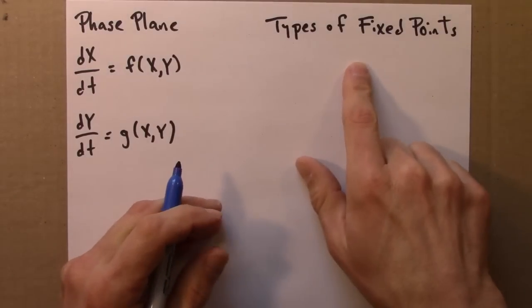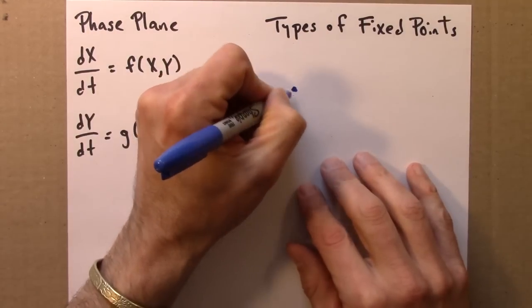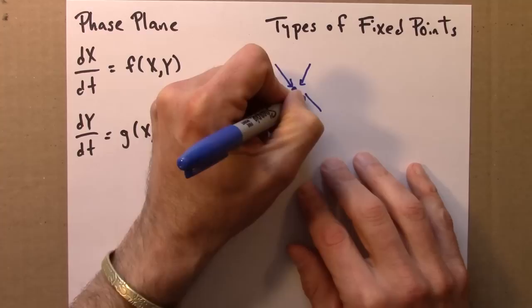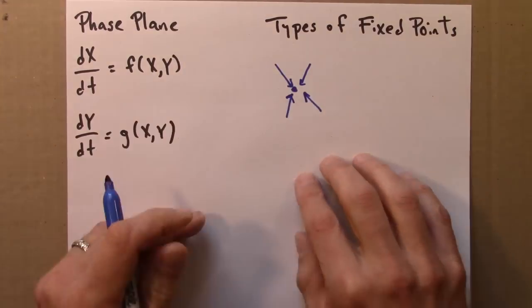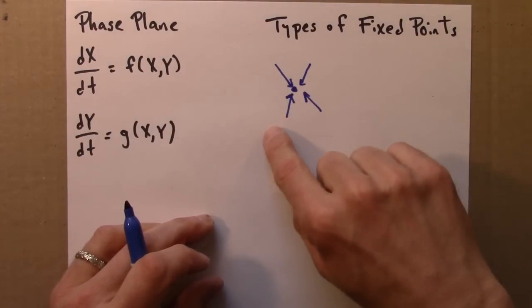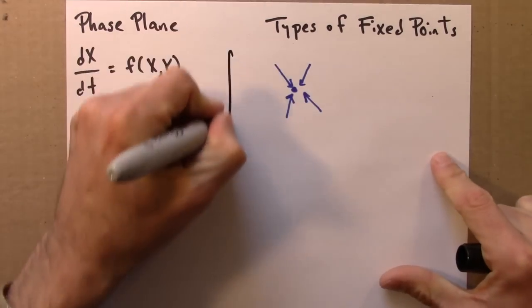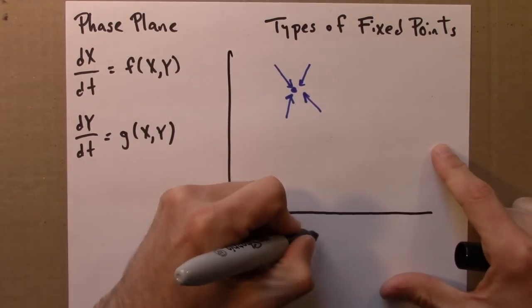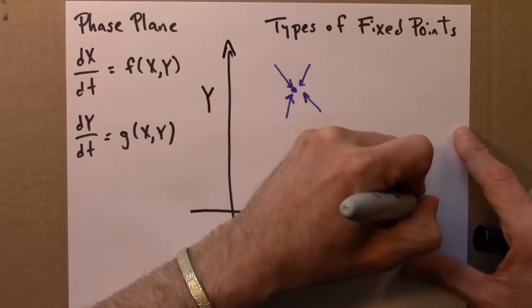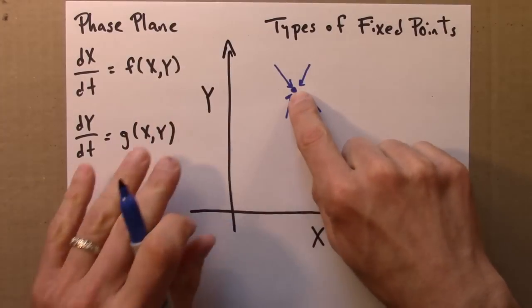As before, we can have stable and unstable fixed points. In 2D, this comes with a twist, almost literally. So this might be a stable fixed point or an attractor would have a bunch of phase lines, or trajectories in a phase plane. I should mention, all of these are going to be in some sort of a phase plane.